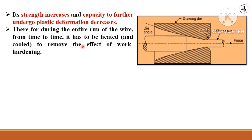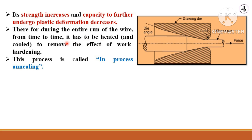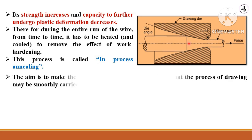Therefore, during the entire manufacturing run of the wire or rod, from time to time it has to be heated and cooled to remove the effect of work hardening. This process of heating and cooling is known as annealing. Due to the annealing process, the raw material is easily converted into the desired shape and size, and the effect of work hardening developed during wire drawing is removed or reduced. The aim is to make the material soft and ductile again so that the wire drawing process may be smoothly carried out.